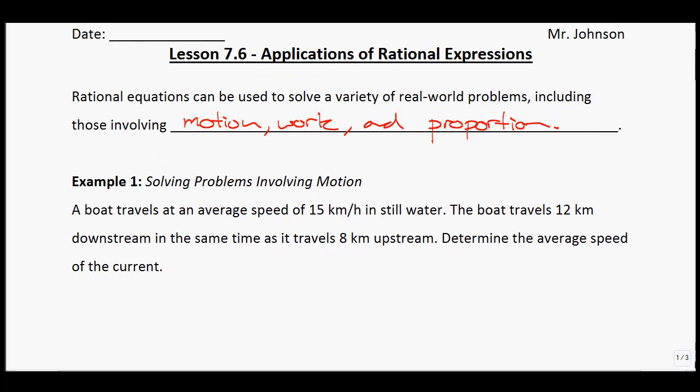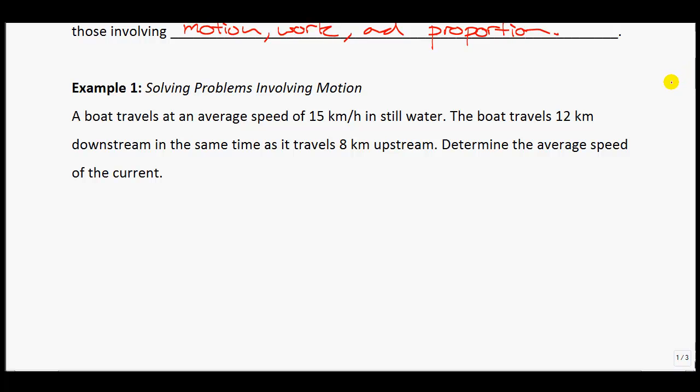Let's dive into one. Example 1: Solving Problems Involving Motion. A boat travels at an average speed of 15 km/h in still water. The boat travels 12 km downstream in the same time as it travels 8 km upstream. Determine the average speed of the current. Before we get started, I want you to recall something: time is equal to distance divided by speed.